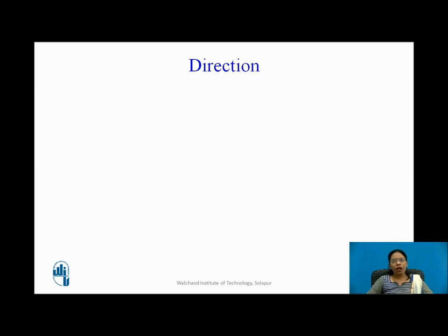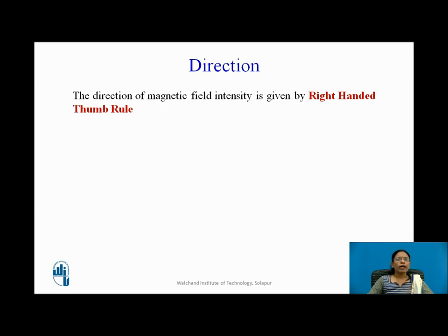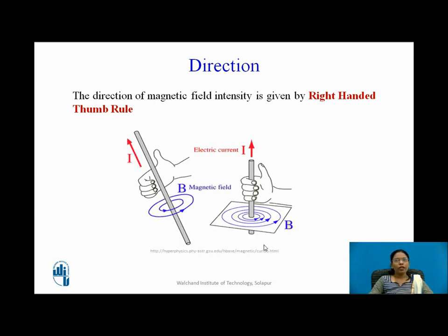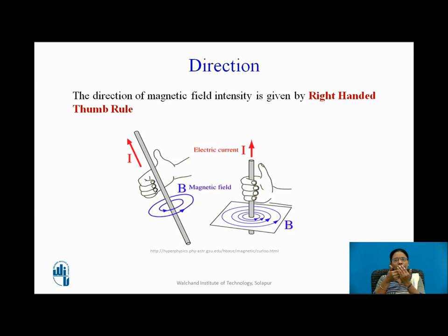The direction of magnetic field intensity is given by the right-handed thumb rule. If I hold the filament with my right hand and my thumb indicates the direction of current, then my curved fingers indicate the direction of the magnetic field intensity. This is how we decide the direction of the magnetic field.